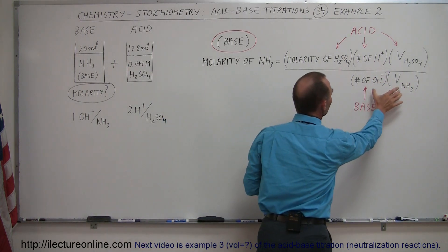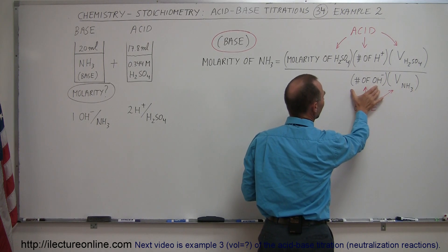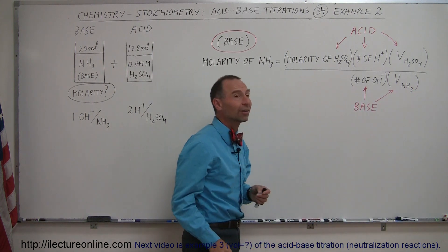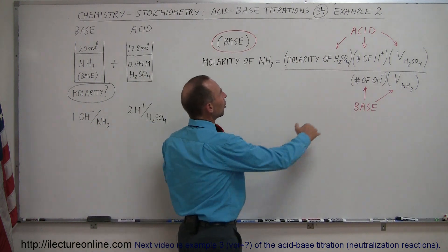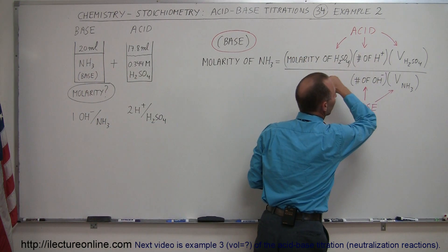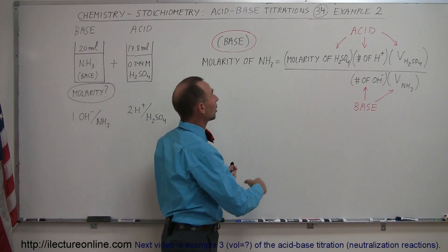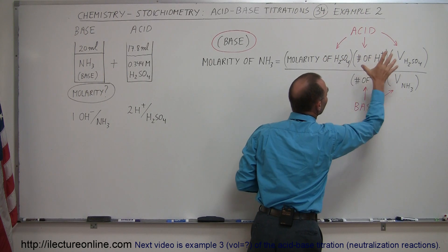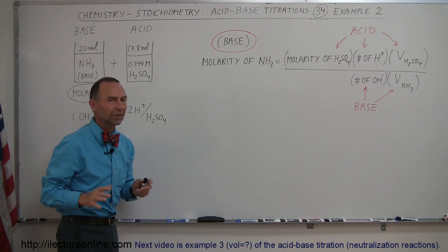And then in the denominator, you put in the specifics of the base, which means you put in the number of hydroxide ions that the base produces per molecule of the base, and the volume of the base that you had. So if the unknown is the base, then you want to put all the acid information on the numerator and all the base information in the denominator. If the unknown was an acid, then you want to put all the quantities of the base in the numerator and the quantities of the acid in the denominator. So the next example will reverse everything so you can see it.